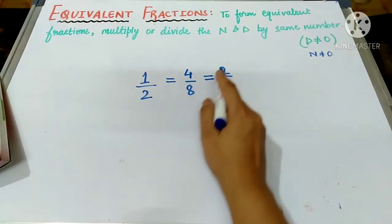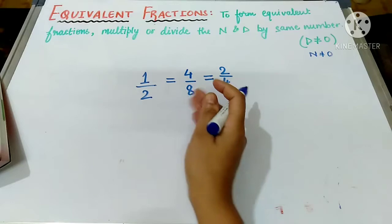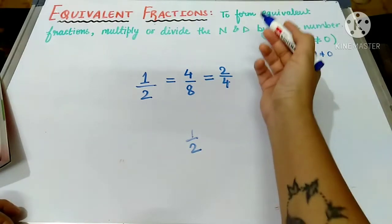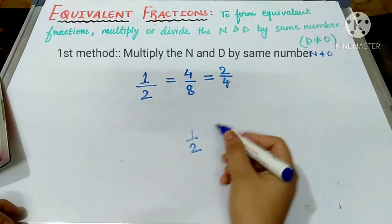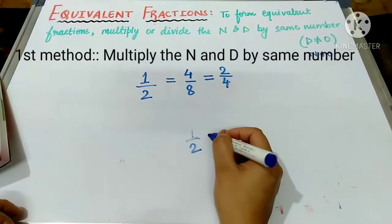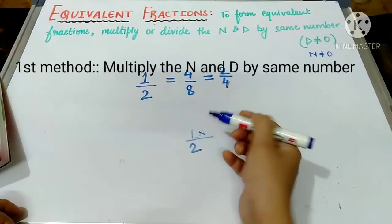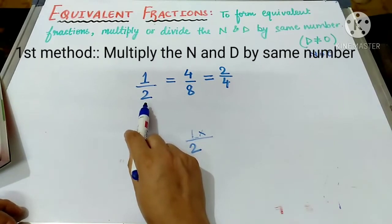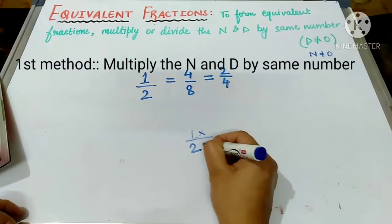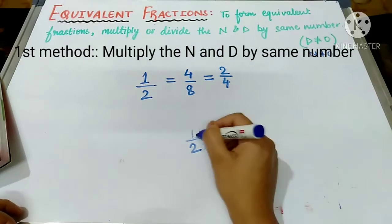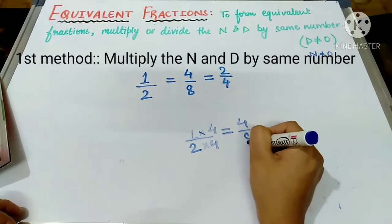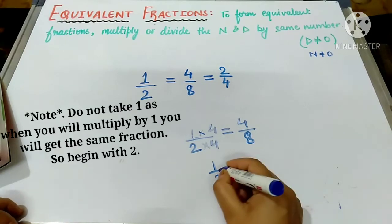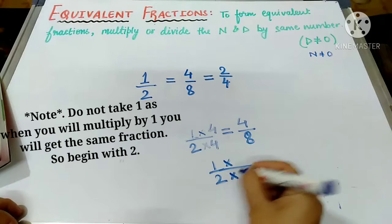We have seen that one upon two, four upon eight, and two upon four are equivalent fractions. Agar aap fraction mein likho ki one upon two ke equivalent fraction kya hoga — we will use this rule. We can multiply one upon two in the numerator and denominator by the same number. You can take any number of your choice. Suppose agar mujhe four upon eight banana hai — in the table of two, eight comes at two fours are eight. So I will multiply by four: one fours are four and two fours are eight. So four upon eight will be the equivalent fraction.